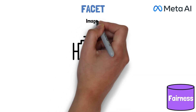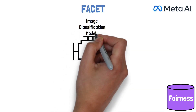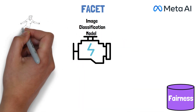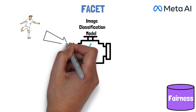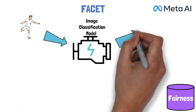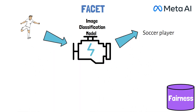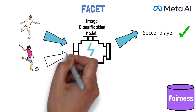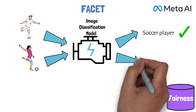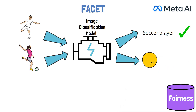Computer vision models are known to have biases that can impact their performance. For example, given an image classification model, if we feed it with an image of a male soccer player, the model is likely to classify that image as a soccer player. However, if we introduce the model with a female soccer player, the model is more likely to be confused and may not classify the image correctly.